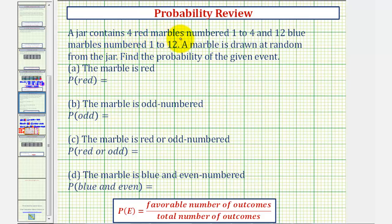A jar contains four red marbles numbered one through four and 12 blue marbles numbered one through 12. A marble is drawn at random from the jar. Find the probability of the given event.